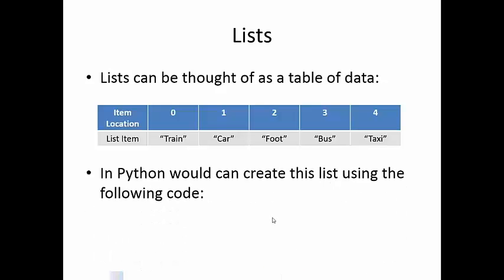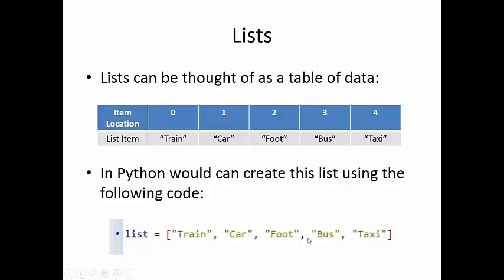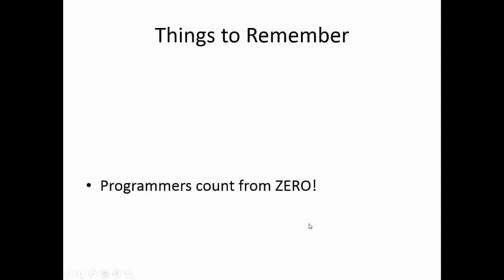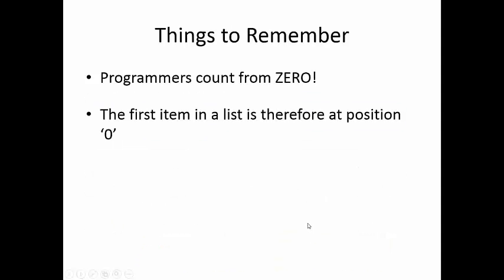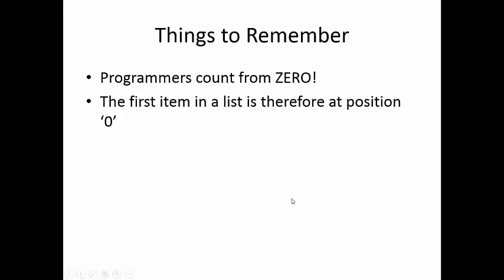In Python we can create lists using the following code — it's just like assigning something into a variable, but we use square brackets to define a list. Each item is separated by commas, so item 0 is train, item 1 is car, item 2 is foot, and so on. Remember that programmers count from 0, so the first item in the list is at position 0.